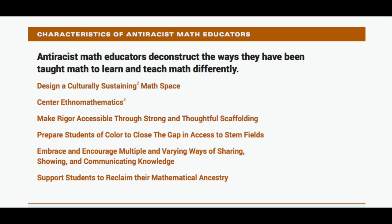The document says to 'make rigor accessible through strong scaffolding, prepare students of color to close the gap and access to STEM fields, support students to reclaim their mathematical ancestry.' I really hate this idea of closing the racial gap for the STEM field. Because to me, if you're actually dedicated and talented to do mathematics or sciences, you should be in that STEM field by your own merit. It seems to imply that you need some sort of quotas to get more people into those jobs. That goes against the principle of equality of opportunity — it seems to push equality of outcomes, and I'm absolutely against that.